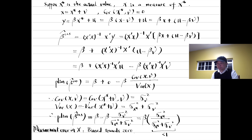The OLS estimate of beta can be written as three terms. The probability limit of the OLS estimate of beta is beta times a ratio. The ratio is positive and always less than one. Therefore, the OLS estimate of beta is biased towards zero. This is called the attenuation bias in OLS due to the classical errors-in-variables. On average, the estimated OLS effect will be attenuated.